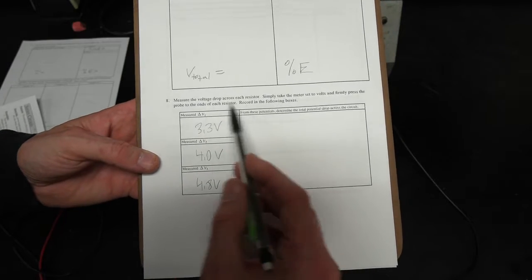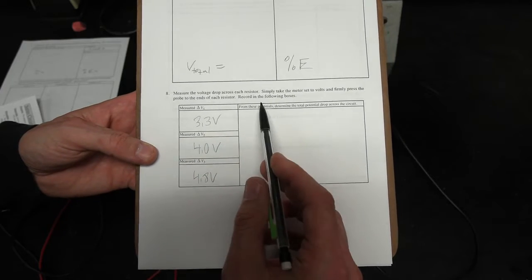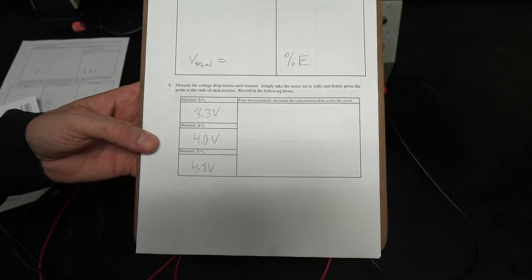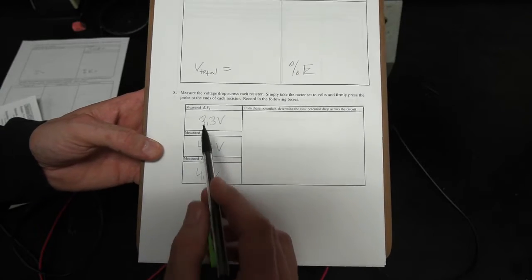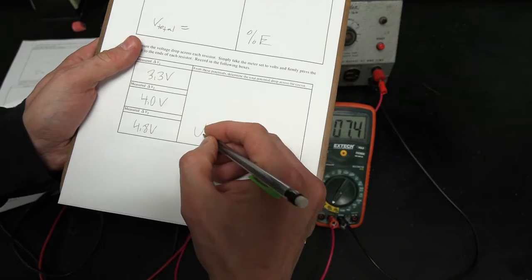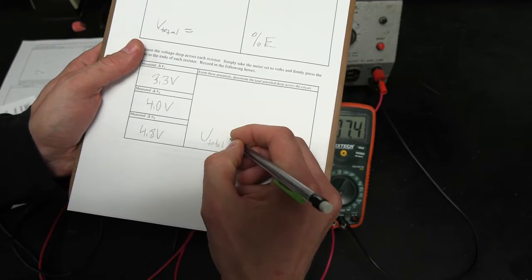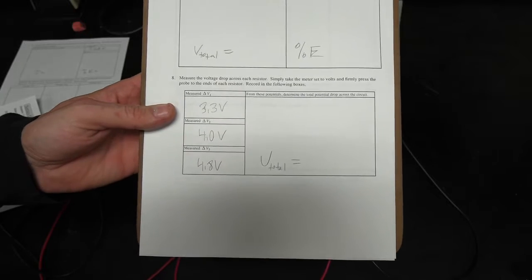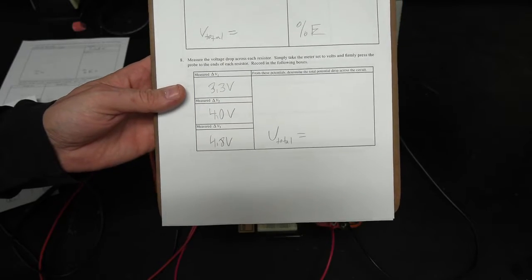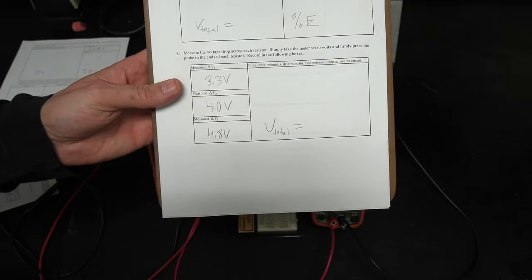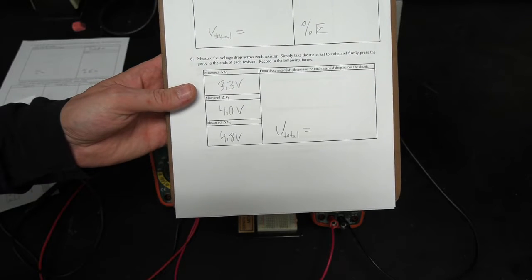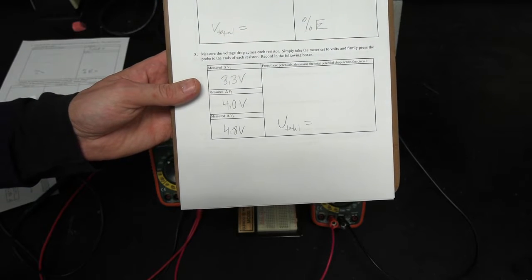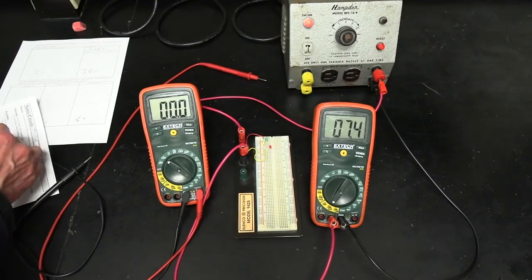And then, so from these potentials, determine the total potential drop across the circuit. So from these values, what's V total? Of course, you're calculating that in the nice way that we always calculate anything in the lab, showing all the steps and all the things properly plugged in. So go ahead and do that now. Okay. Let's move on.